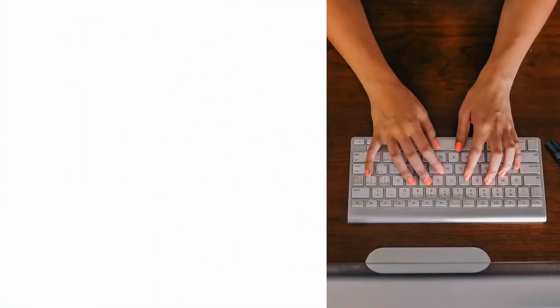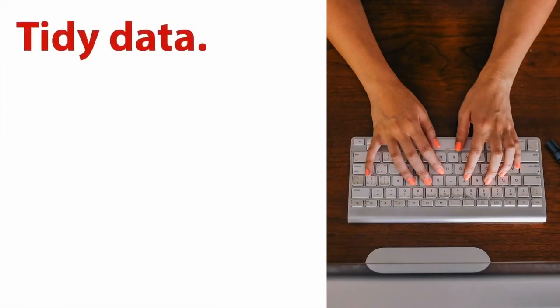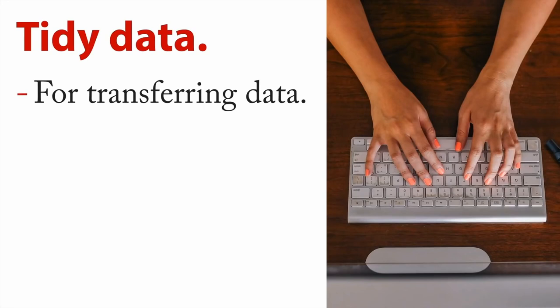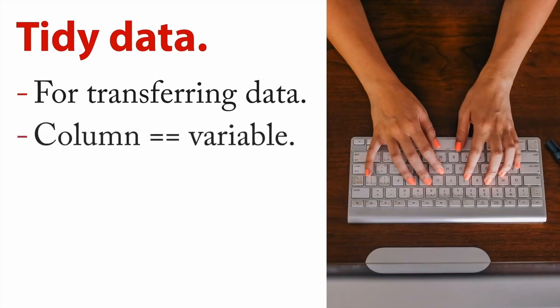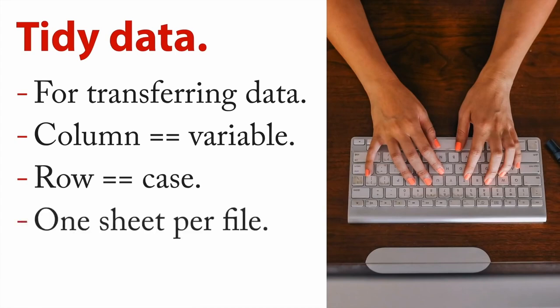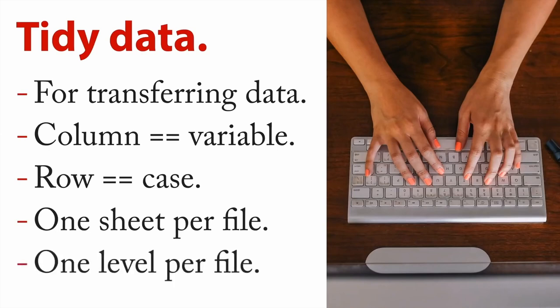When working with spreadsheets, there's one thing you need to be aware of: they're really flexible, but that flexibility can be a problem. In data science, you specifically want to be concerned about something called tidy data — a term I borrowed from Hadley Wickham, a well-known developer in the R world. Tidy data is for transferring data and making it work well. There are a few rules: a column is equivalent to a variable, rows are equal to cases, you have one sheet per file, and one level of measurement per file. This undoes some of the flexibility inherent in spreadsheets, but makes it really easy to move data from one program to another.